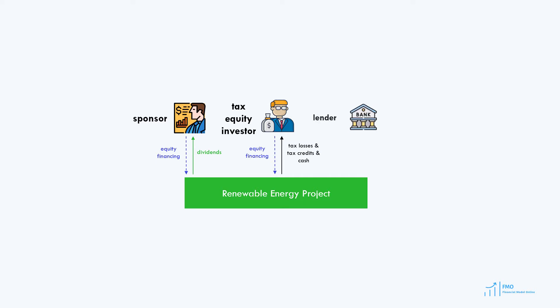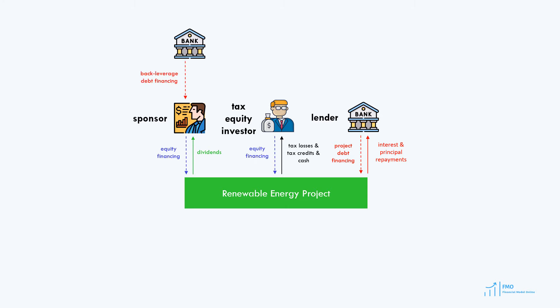Then we have a lender who provides debt financing to the project. However, having project-level debt financing is rare in tax equity structures because the tax equity investor typically does not want project-level debt, as it increases the project's riskiness. What we see in the United States is debt financing raised at the level of the sponsor, called a back-leveraged loan, and the lender is called a back-leveraged lender.